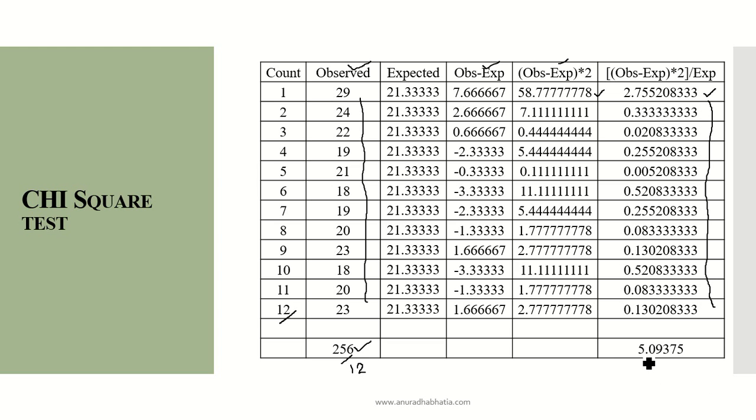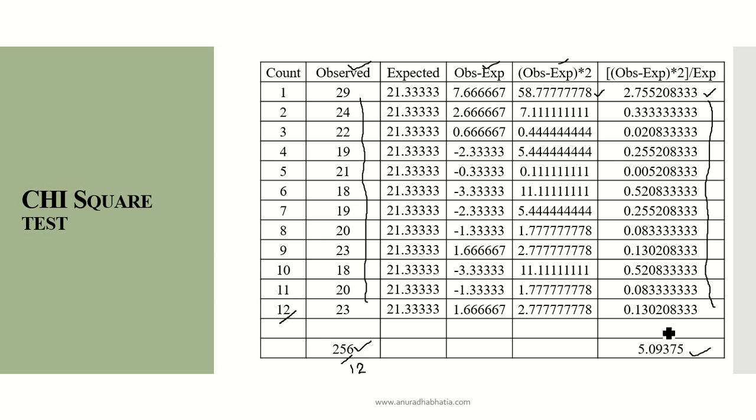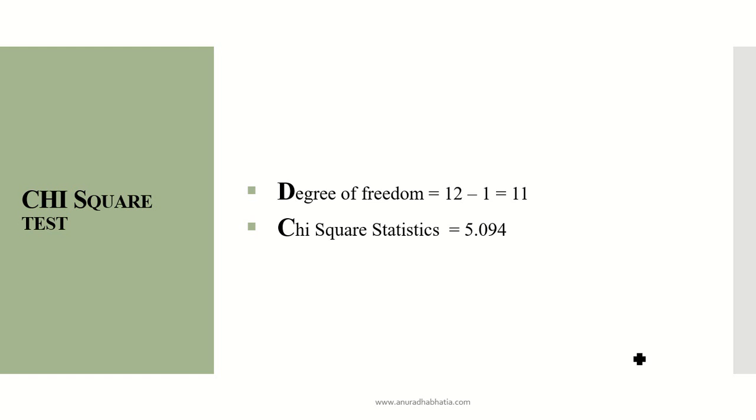When we sum them all up, we get 5.09375. This is the summation of (observation minus expected)² divided by expected. This is the chi-square test statistics value. I rounded 5.09375 to 5.094. The degree of freedom is 12 minus 1, which equals 11.